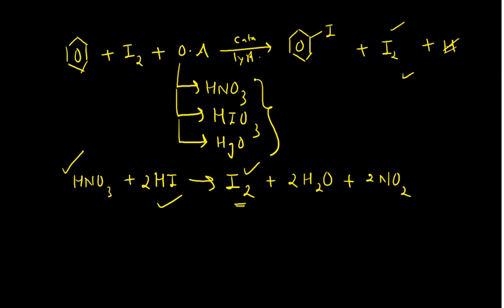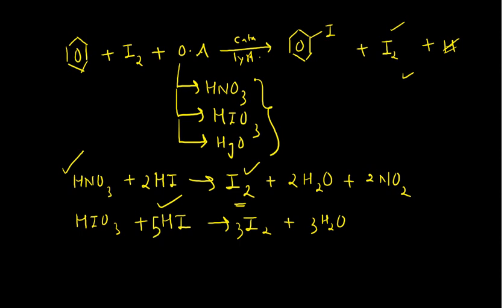Similarly, if you use HIO3 as the oxidizing agent, it reacts with HI to give I2 and H2O. Balancing this reaction: HIO3 + 5HI → 3I2 + 3H2O. This is how you can write the balanced reaction for iodination using HIO3 as the oxidizing agent.